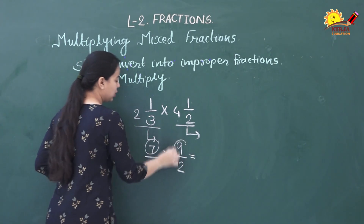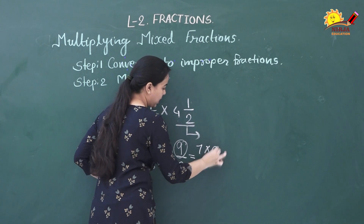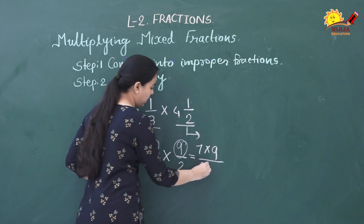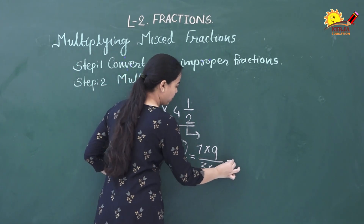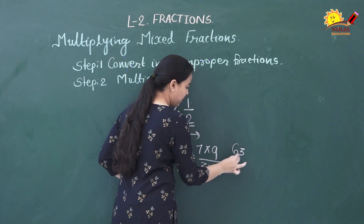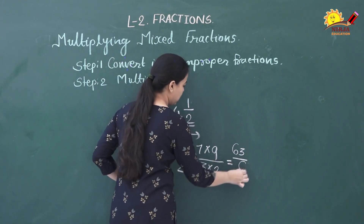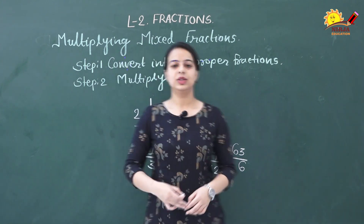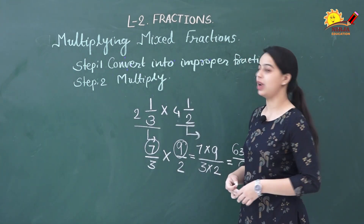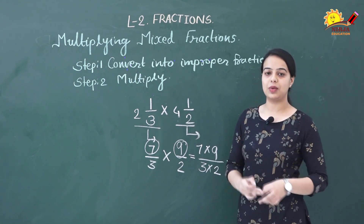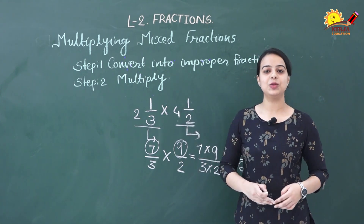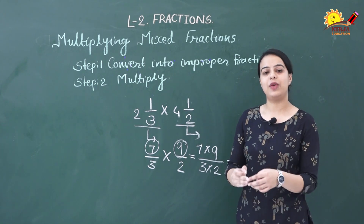Multiply numerator by numerator: 7 multiplied by 9, and denominator by denominator: 3 multiplied by 2. 7×9 = 63, and 3×2 = 6, giving 63/6. This is how you multiply mixed fractions: first convert them to improper fractions, then follow the fraction multiplication method.